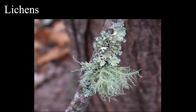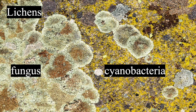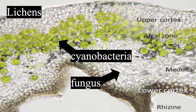Imagine you have two good friends who are totally different but decide to live together because they help each other out — that's kind of what a lichen is. It's not just one thing; it's two things living together as partners. One part of the lichen is a fungus, like a tiny mushroom or mold. The other part is usually an algae or something similar to cyanobacteria — tiny green bacteria that can make food from sunlight. The fungus builds the house, which is the body of the lichen, and the algae is like the cook, making food from the sun's energy. This teamwork is called symbiosis, meaning living together and helping each other out.